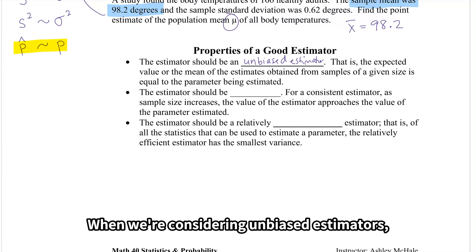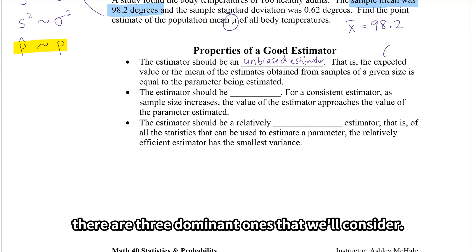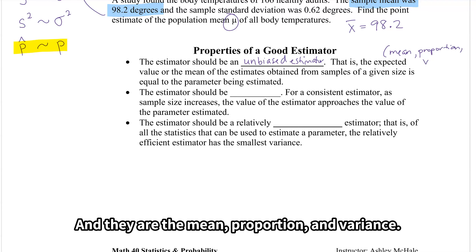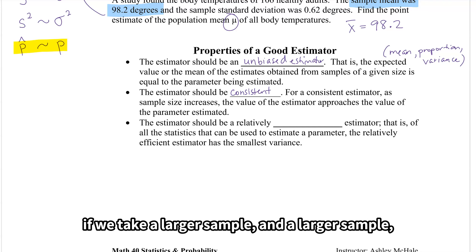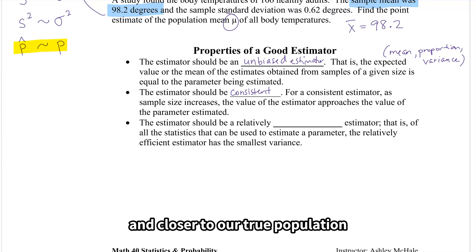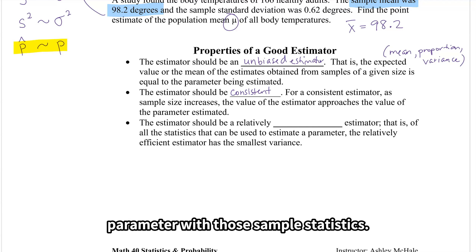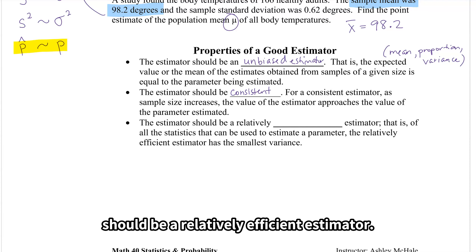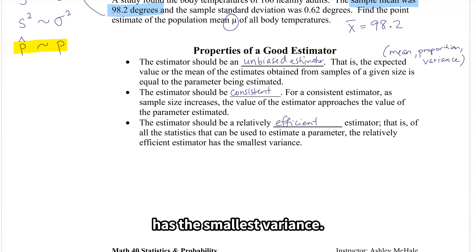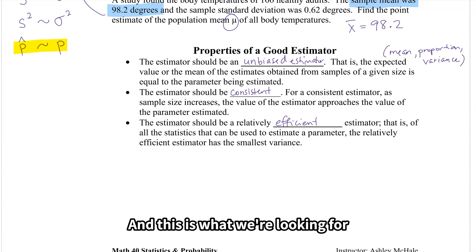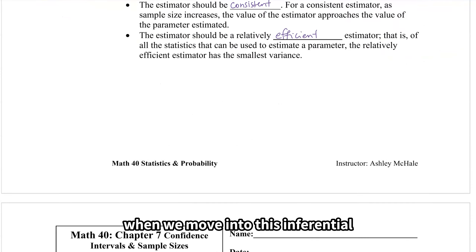When we're considering unbiased estimators, there are three dominant ones: the mean, proportion, and variance. The estimator should also be consistent — meaning if we take a larger and larger sample, we get closer and closer to the true population parameter. And the estimator should be relatively efficient: of all the statistics that can be used to estimate a parameter, the relatively efficient estimator has the smallest variance. It's not critical that you memorize these things, just know these are properties of a good estimator.